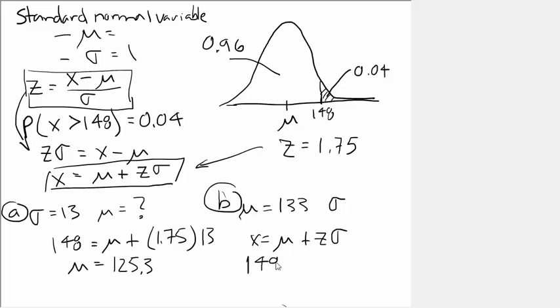Again, we have 148 is equal to our mean, 133, plus z, 1.75 times our unknown standard deviation. And this time, I'm going to do the calculation and be right back. This time, when we do the math, we find that the population standard deviation is equal to 8.57.